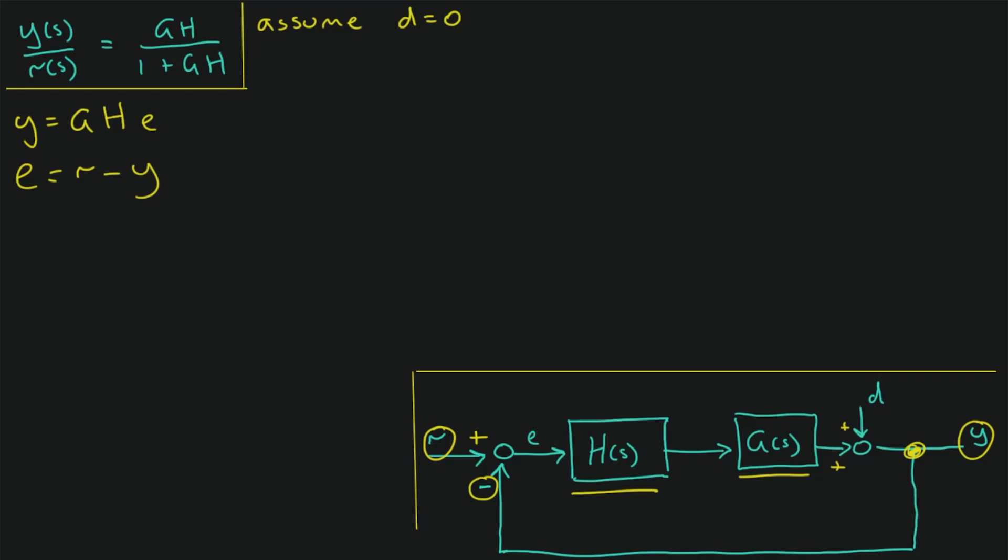If we substitute that into our equation for Y, then we have Y is equal to GH times (R minus Y). And we can expand those brackets. So we get Y is equal to GH times R minus GHY.